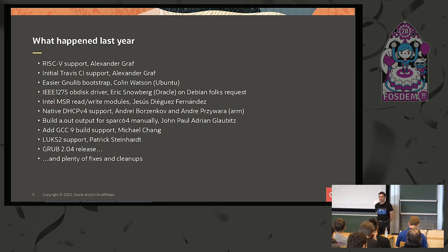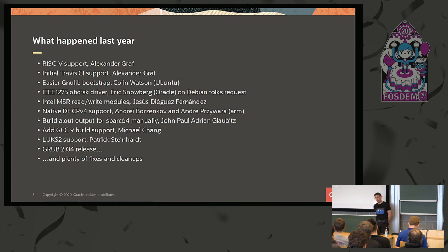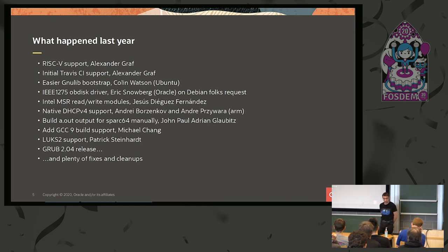John realized that Binutils folks decided to drop support for SPARC64. He tried to convince the Binutils guys to get it back, but it wasn't possible. So he started thinking about how to get SPARC64 support back into Grub, and fortunately it was quite easy — the patch was pretty small, surprisingly. Currently we have SPARC64 support back in Grub.